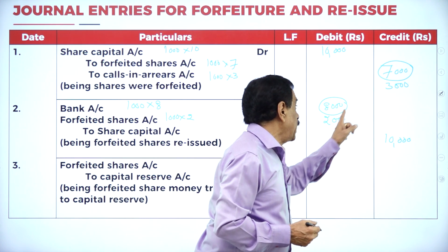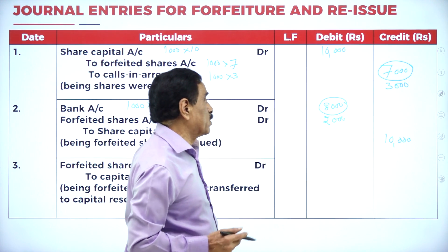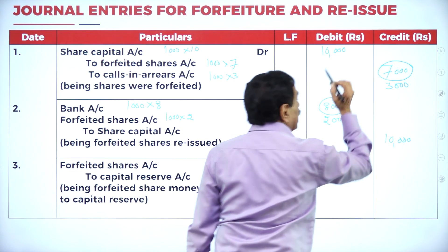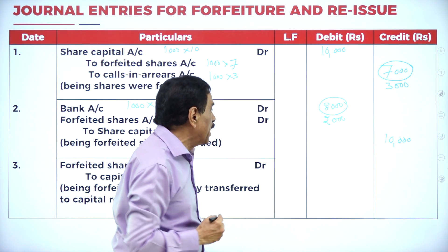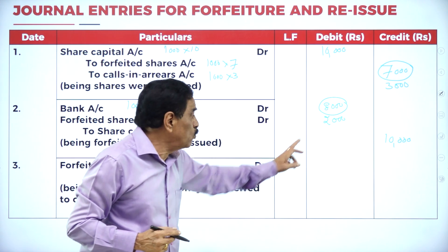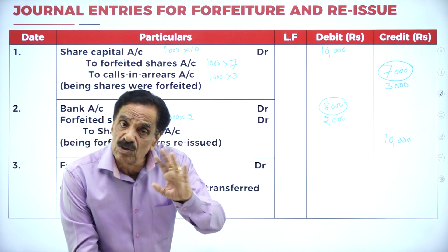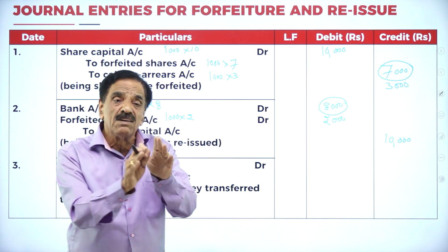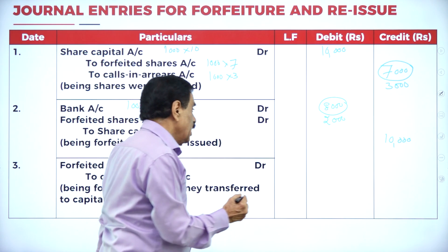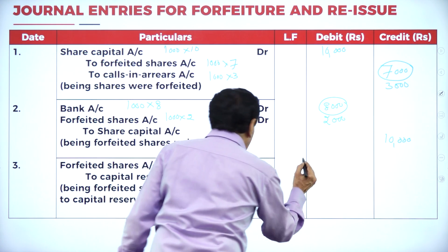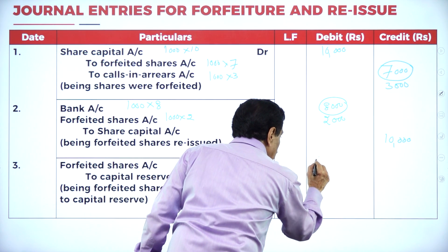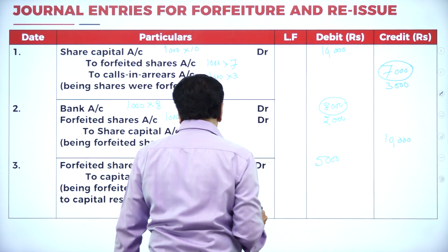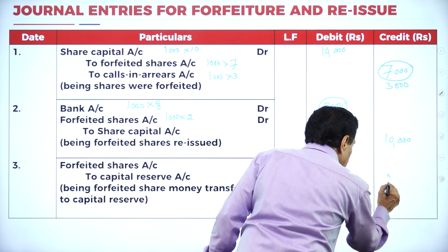To summarize: first received ₹7,000, then received ₹8,000, total ₹15,000. Actually require ₹10,000. Excess ₹5,000 goes to Capital Reserve. This money is kept in reserve so that if there is any shortage of capital, it can be utilized as capital of the company.